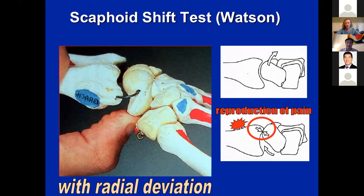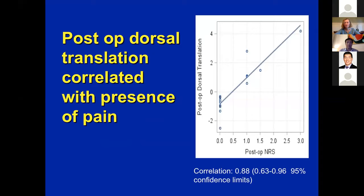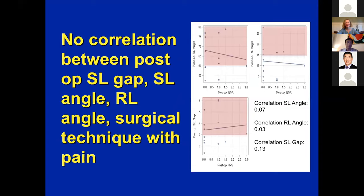We did a cohort study looking at patients' radiographs after surgery for scapholunate problems to see what parameters correlate with pain relief. Post-op dorsal translation correlated with the presence of pain: if they had dorsal translation post-op, they still had pain; if not, they had no continued pain. There was no correlation with the things more traditionally discussed — scapholunate gap, SL angle, RL angle. This explains why some patients come back with a gapped-open radiograph post-op but tell you they don't hurt that badly — you probably stopped them from translating dorsally.